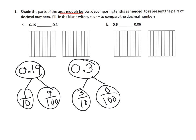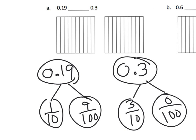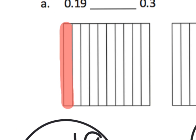We're going to use these pieces of information to shade in our area. I'm going to zoom in a bit. For 0.19, we shade in one tenth plus nine hundredths. So one tenth looks like — there's our one tenth. Now for the nine hundredths, we need to cut this tenth into ten pieces. I'm going to cut it in half and then cut each half into five pieces.